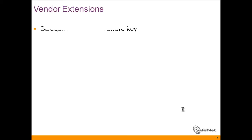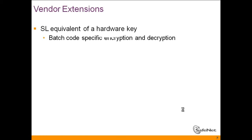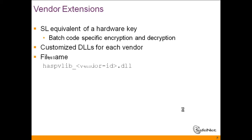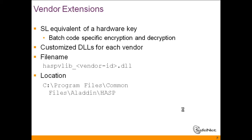When talking about the vendor extension, we are talking about aspvlib with the vendor ID inside. This file is downloaded as part of the Master Wizard download from our website, and it resides under C:\Program Files\Common Files\Aladdin HASP.